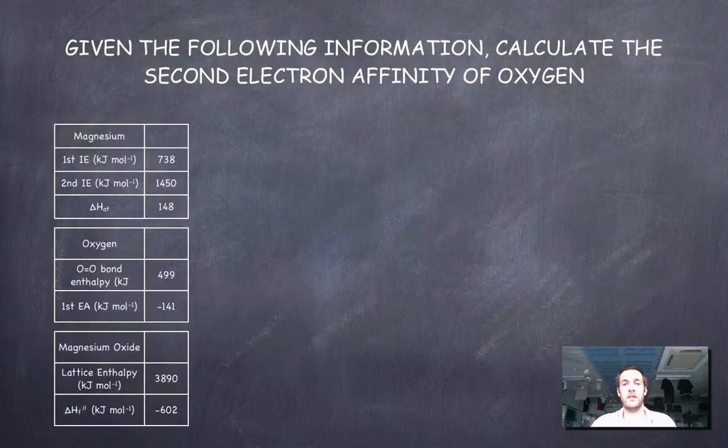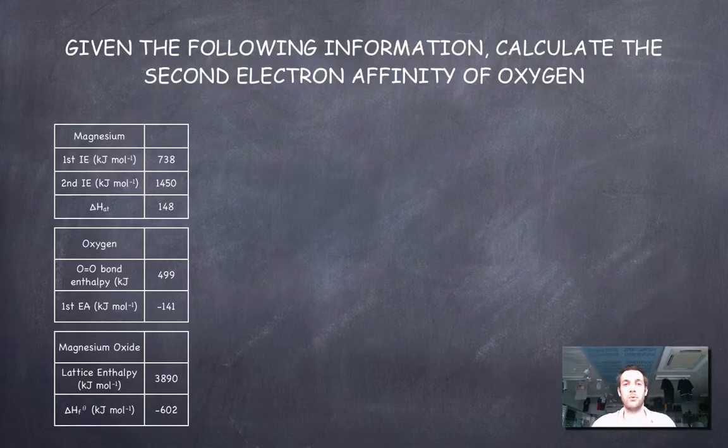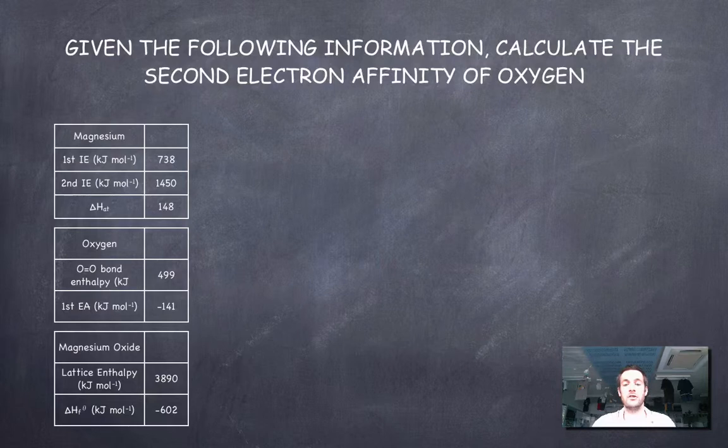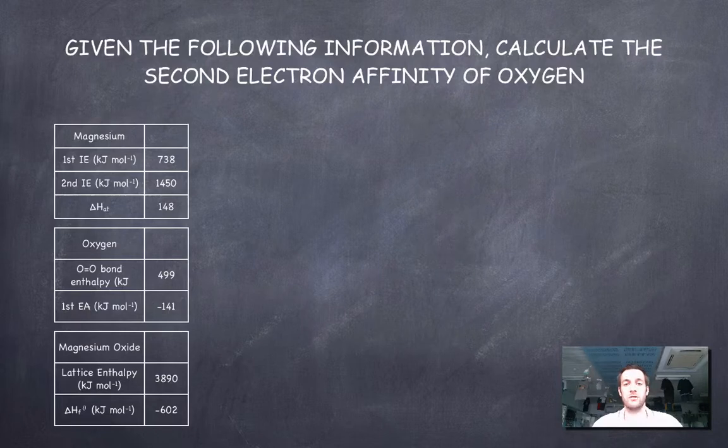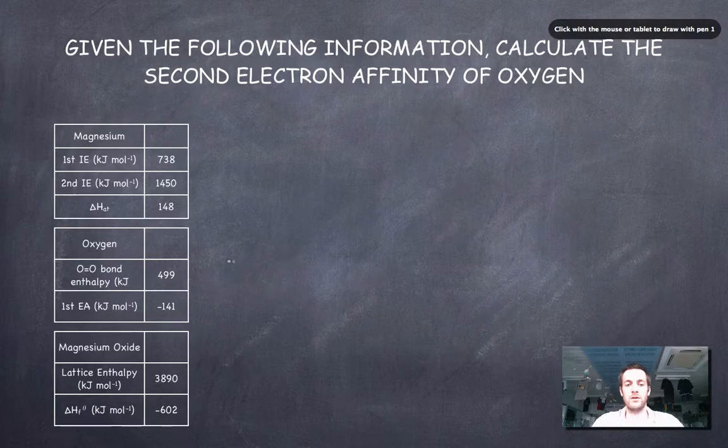I think the best way to review all the things that we've done is to construct a Born-Haber cycle from this data and to talk about what I'm doing at each stage, and then to find this thing that we're being asked to find, the electron affinity of oxygen, or the second electron affinity of oxygen.